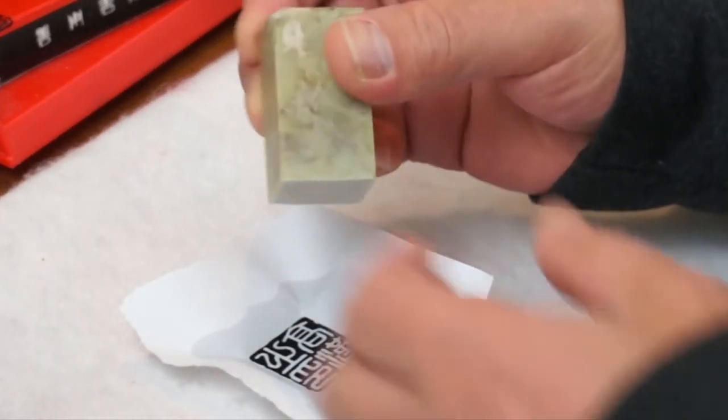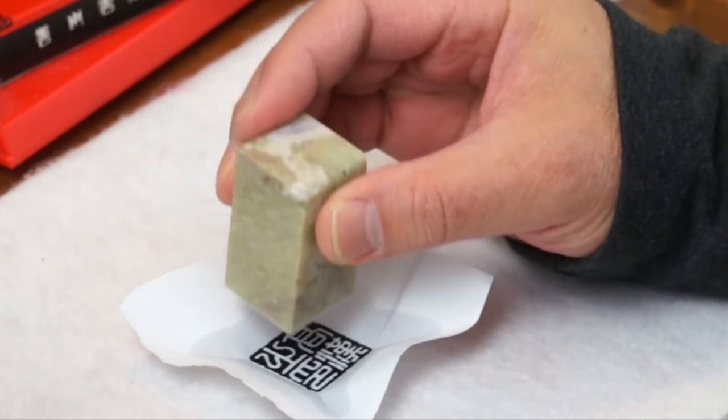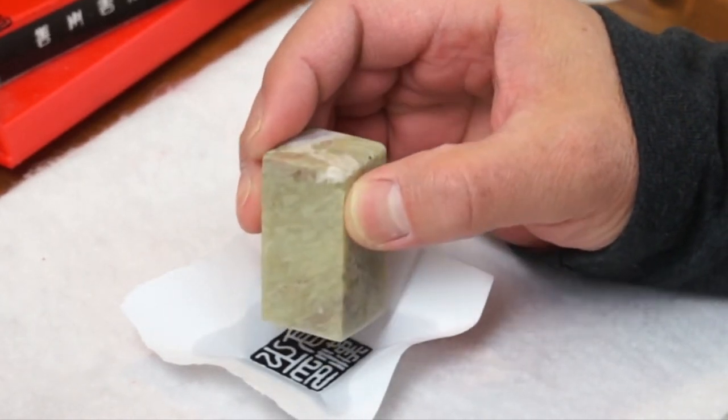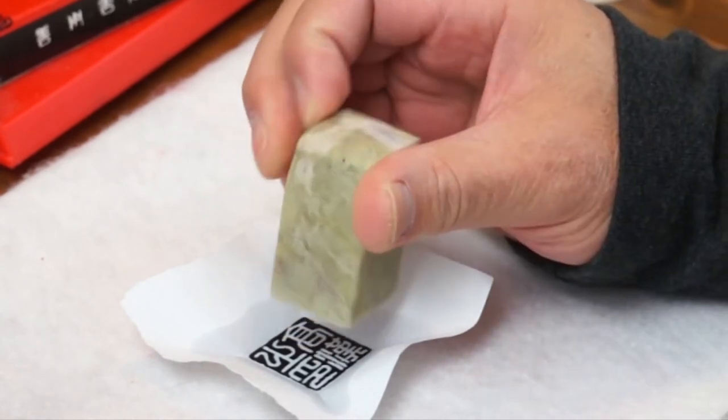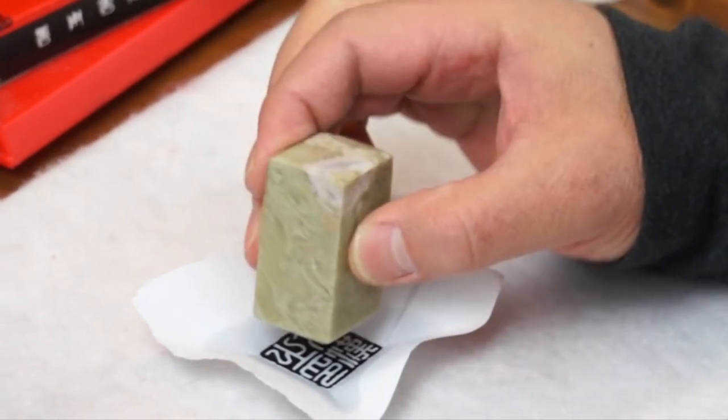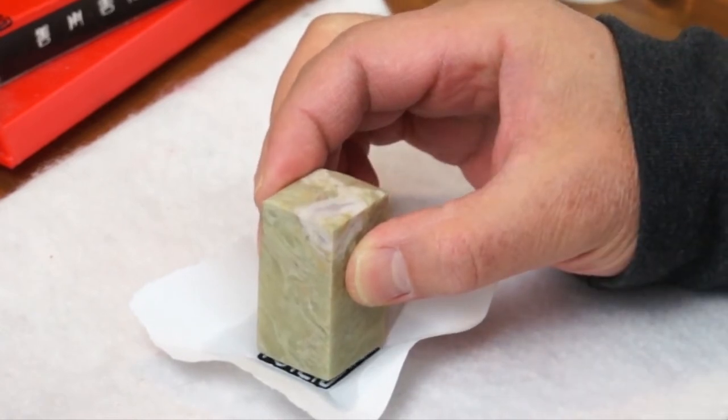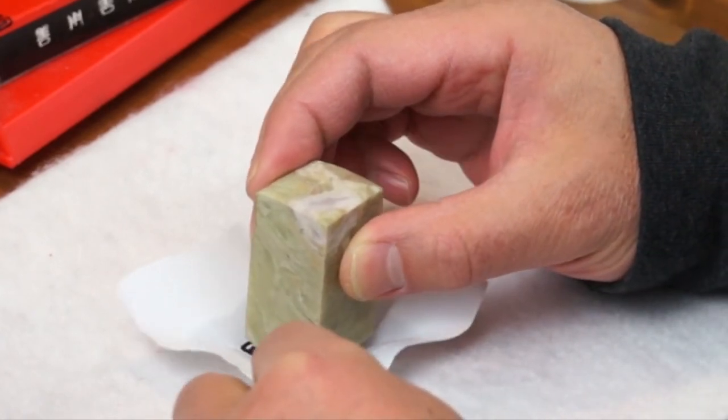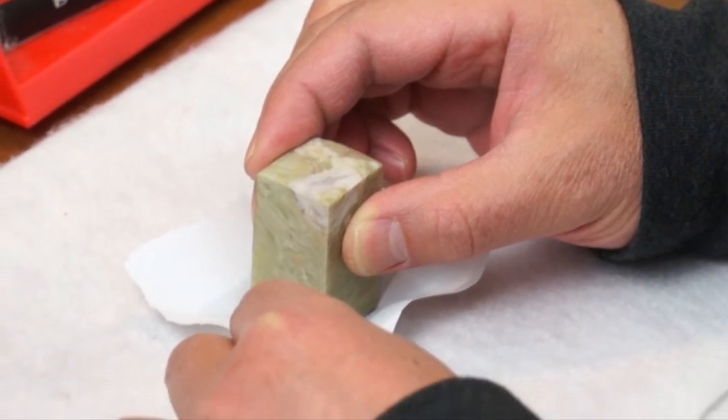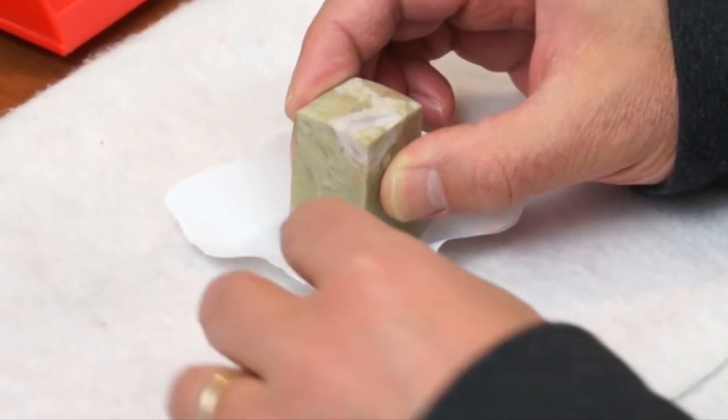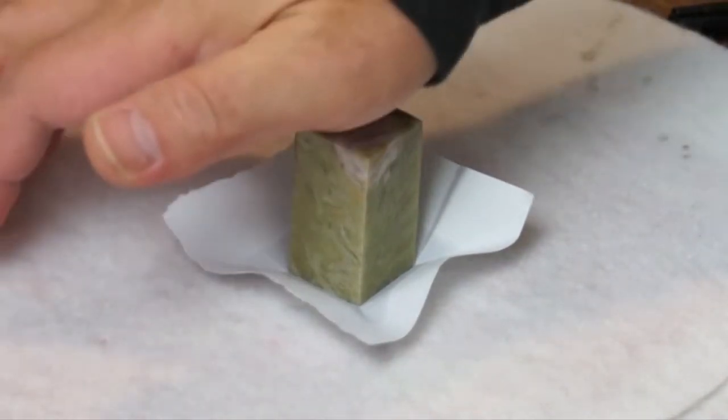At the same time, you choose a nice side to make sure it's easier to recognize the orientation. This has a pattern on top. So I just carefully place the stone against the design, and then press.